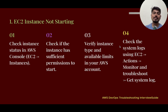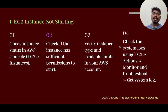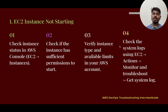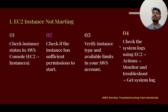The first question is: EC2 instance not starting — how do we troubleshoot this? First, check the instance status in the AWS console and verify the instance has sufficient permission to start. Next, verify the instance type and available limit in your AWS account, because each service has some quota limit that might be exhausted.